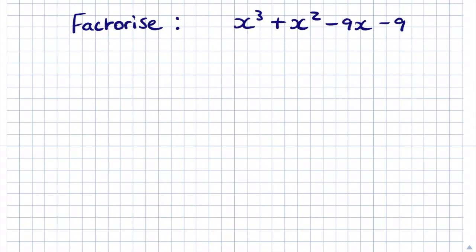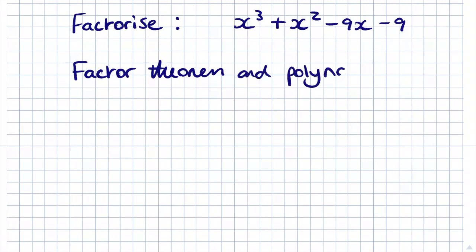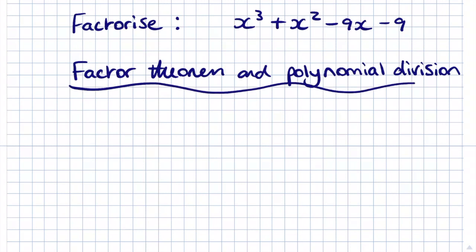So now we're going to factorise this same equation using the factor theorem and polynomial division. The factor theorem involves a bit of trial and error — we test different values of x until our function f(x) equals 0. In other words, we're trying to find the points at which the curve crosses the x-axis.